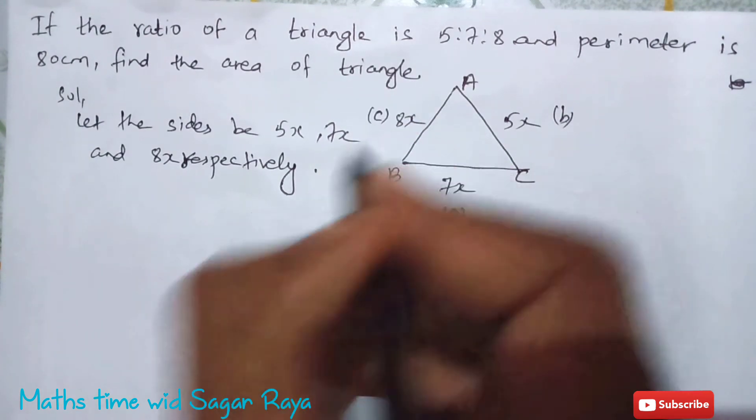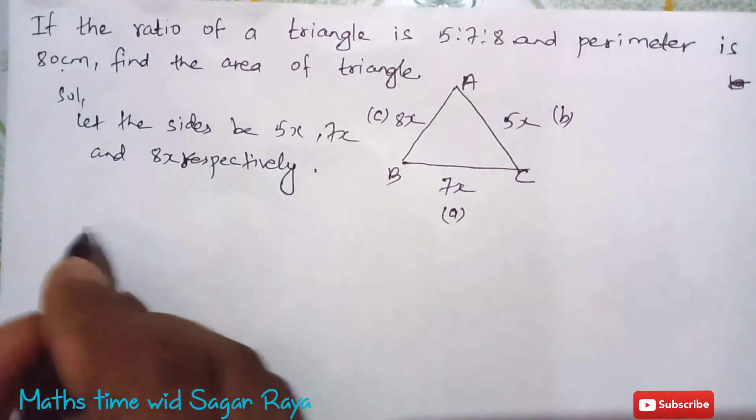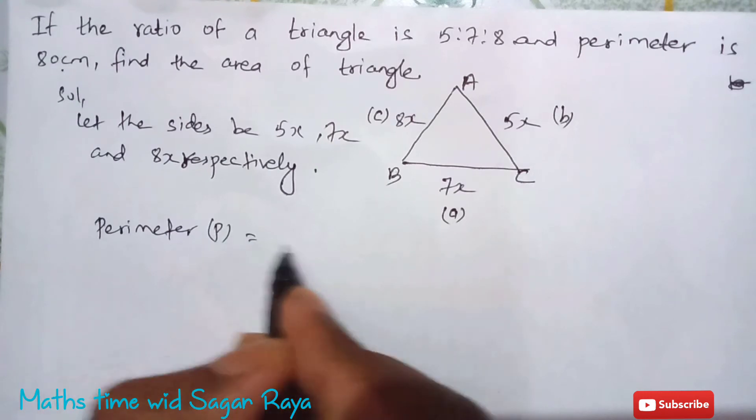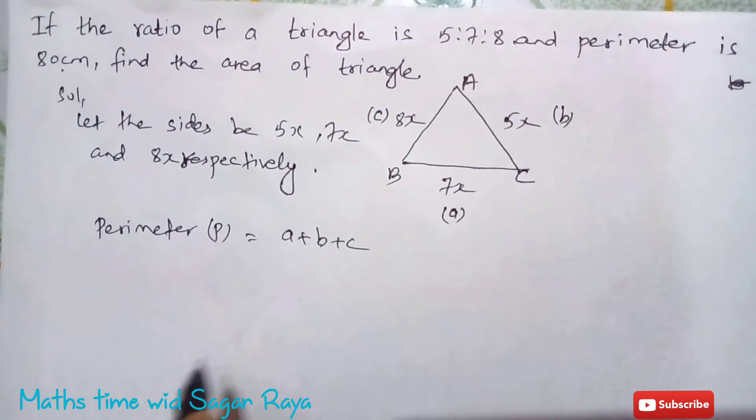Now perimeter is given 80 cm, so I am going to use the formula for perimeter. We know perimeter denoted by P equals to a plus b plus c.